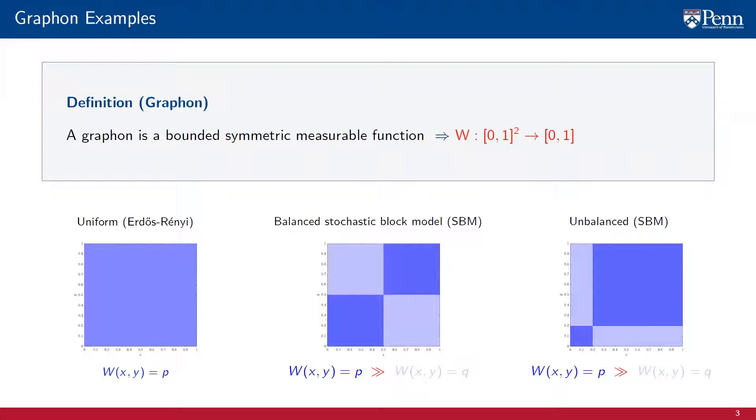An unbalanced SBM graphon has an analogous definition except that the sizes of the communities are unbalanced. One community is larger than the other. In the figure, we have a community that spans labels from 0 to 0.2 and another community that spans labels from 0.2 to 1. Within communities, we have strong weights, p. Across communities, we have weaker weights, q.